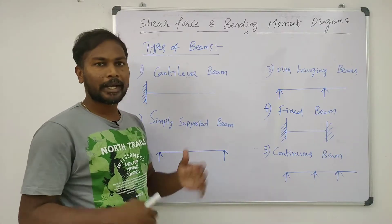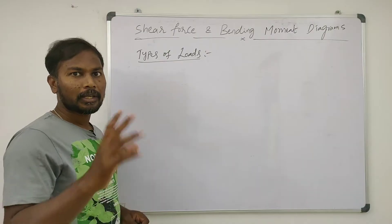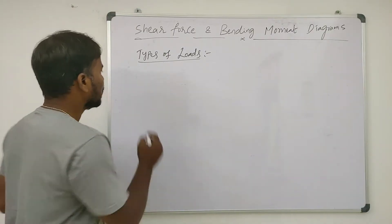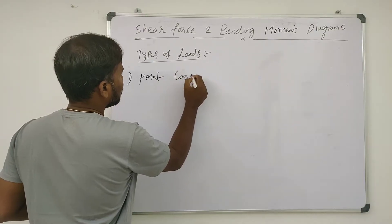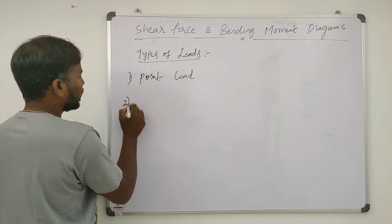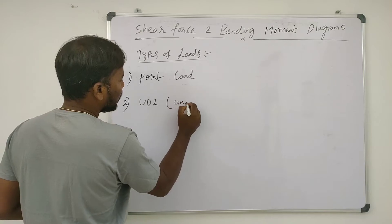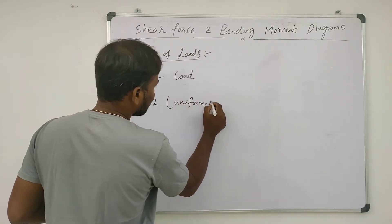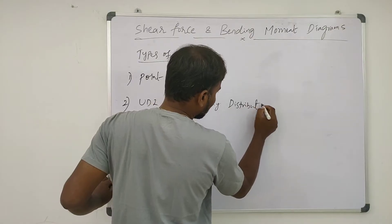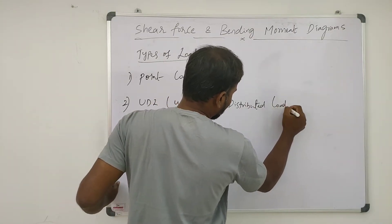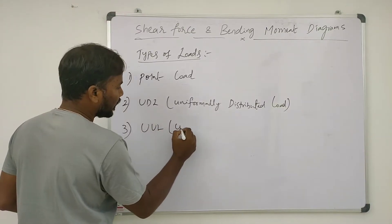Now we will discuss the types of loads. Basically we have three types of loads. One is point load. Second one is UDL, that means uniformly distributed load. And third one is UVL, uniformly varying load.